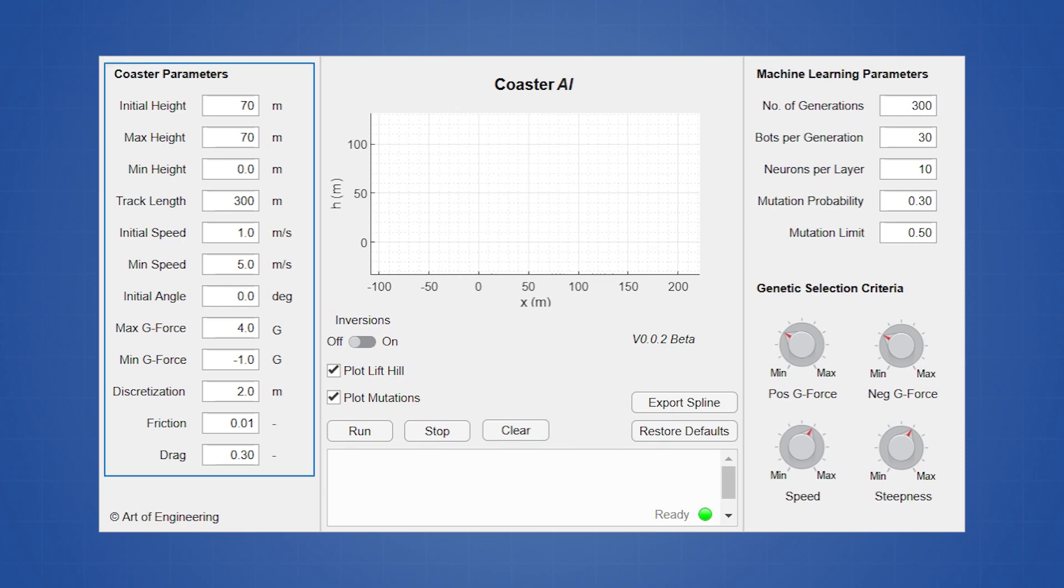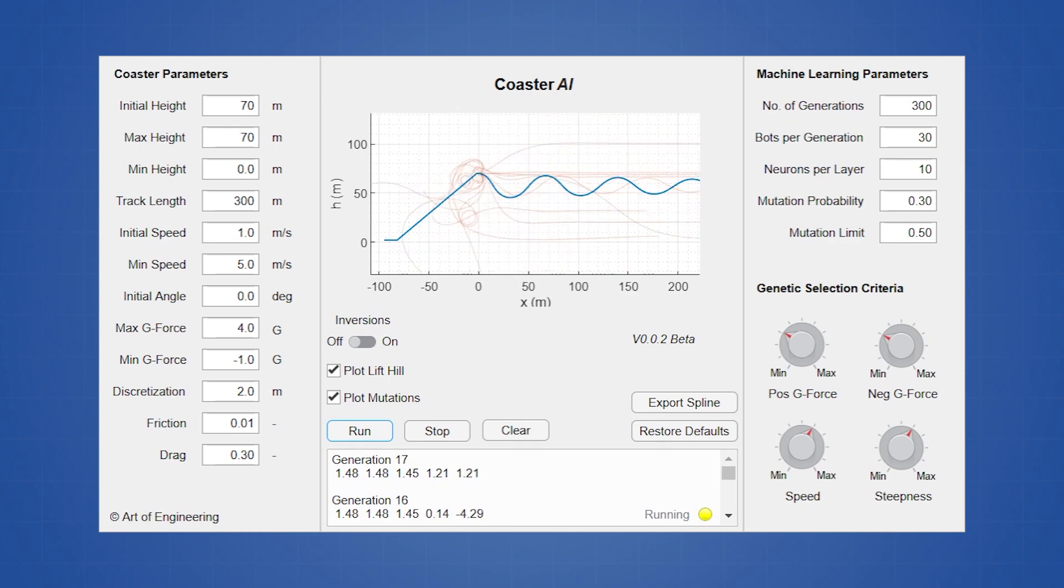Down the left are the input parameters and constraints for generating splines. At the top right are the genetic algorithm and mutation parameters for machine learning, and at the bottom right are the weight modifiers for the scoring criteria. Once these are set, we can go ahead and hit run to start the program, and the top figure will begin plotting the best results from each generation.